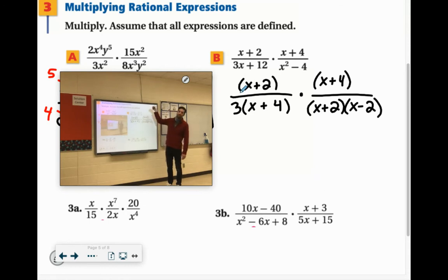Now again, it says assume they're all defined. But if they didn't say that, then you would say x cannot equal negative 4, x cannot equal negative 2, and x cannot equal positive 2. But, another day. So what do you see in the top and the bottom that we can cancel out? I see an x plus 2 that we can cancel. I also see an x plus 4 that we can cancel.